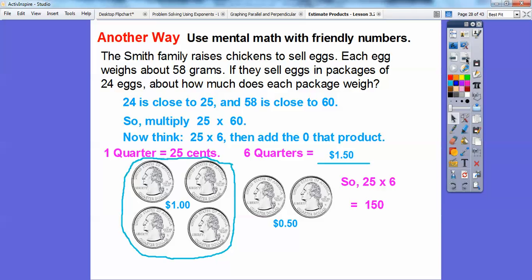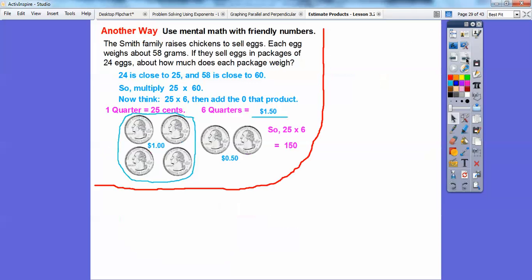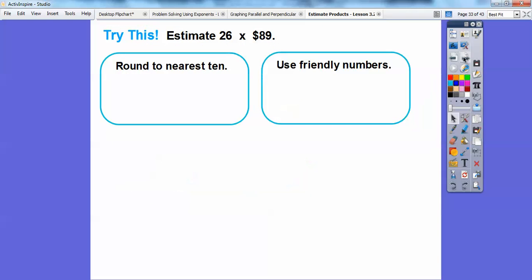So if 25 times 6 is 150, let me shrink this problem up right here. Well, if 25 times 6 is 150, then 25 times 60 is going to be 150 with the extra zero right there. You see how I'm doing this? So each package of 24 eggs will weigh about 1,500 grams. That's pretty slick, huh? Nice, friendly numbers using quarters right there.